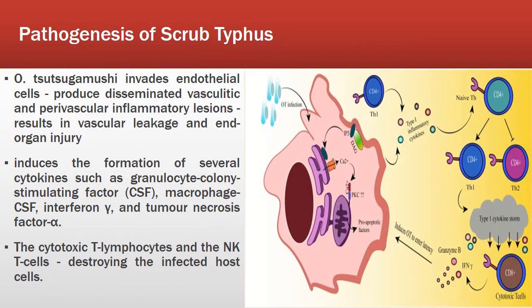Regarding pathogenesis, Orientia tsutsugamushi invades the endothelial cells and produces disseminated vasculitic and perivascular inflammatory lesions, which results in vascular leakage and end-organ injury. It induces the formation of several cytokines such as granulocyte colony stimulating factor, macrophage CSF, interferon gamma, and tumor necrosis factor. The cytotoxic T lymphocytes and NKT cells play an important role in destroying the infected host cells.